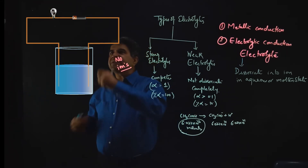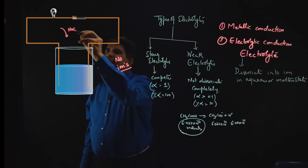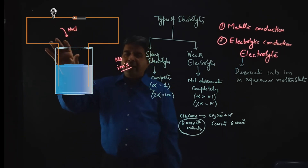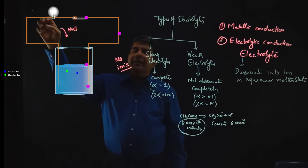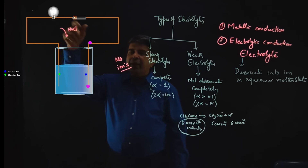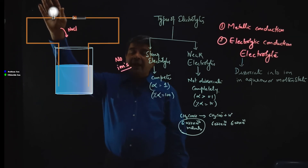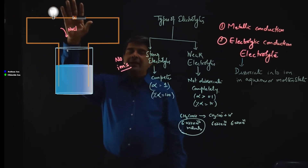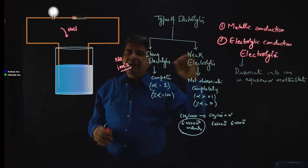Now, suppose we add a pinch of salt — say NaCl — to this distilled water. As soon as NaCl is added it dissociates into ions, and it immediately starts conducting electricity. You can see that the electrons are now carried by cations and anions, the circuit is completed, and the bulb starts glowing. So when an electrolyte is added to water it starts conducting electricity, and this is termed electrolytic conduction.